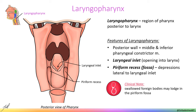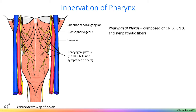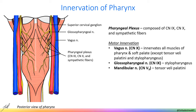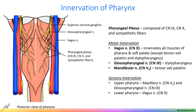The pharynx is innervated by several nerves via the pharyngeal plexus, which is composed of fibers from the glossopharyngeal, vagus, and sympathetic nerves. All muscles of the pharynx and soft palate are innervated by the vagus nerve except stylopharyngeus, which is innervated by the glossopharyngeal nerve, and tensor veli palatini, which is innervated by the mandibular division of the trigeminal nerve, or V3. As far as sensory innervation, the maxillary and glossopharyngeal nerves receive sensory information from the upper portion of the pharynx, while sensory information from the lower pharynx is transmitted by the vagus nerve.